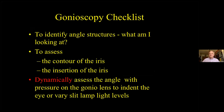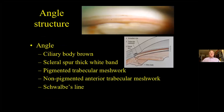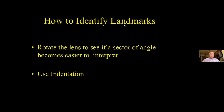First determine what angle structures are visible, go on to assess the contour and insertion of the iris, and then dynamically, usually with the use of indentation, note the effect this has on the visibility of angle structures. So these are the structures you're looking for in the normal angle: the iris, the ciliary body band, the white scleral spur band, then the pigmented trabecular meshwork, the non-pigmented trabecular meshwork, and Schwalbe's line. Going in the other direction: Schwalbe's line, non-pigmented and pigmented trabecular meshwork, the white line of the scleral spur, then the ciliary body band, and then iris. In patients with narrow angles, the superior angle is usually the narrowest, so look inferiorly first. Rotate the lens too — some sectors of the angle may be easier to analyse than others.